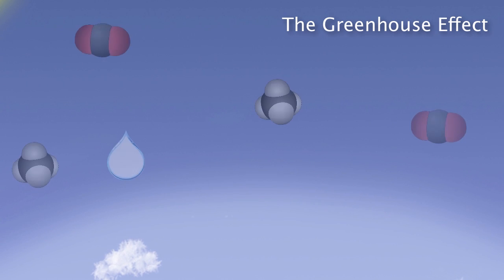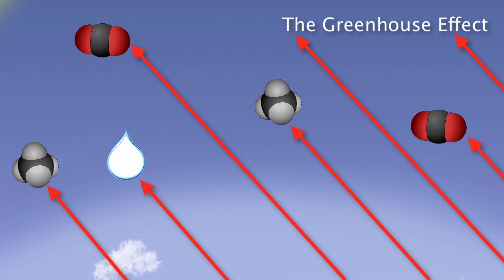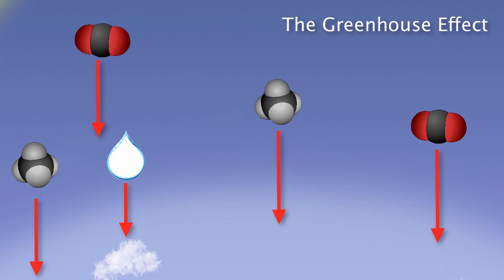However, some of the heat interacts with gases in the atmosphere, such as carbon dioxide, water vapor, and methane. These molecules are commonly called greenhouse gases. This is because they absorb the infrared energy and slowly release it back into the atmosphere over time.